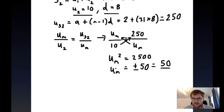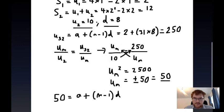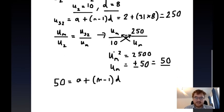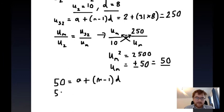Finally, we work backwards. We know that um is equal to 50, so we know that 50 is equal to a plus m minus 1d. That's the formula for the general term of the sequence. We know what a and d are of the arithmetic sequence. We know the first term is 2, the common difference is 8, so we get 50 is equal to 2 plus m minus 1, and the common difference is 8.